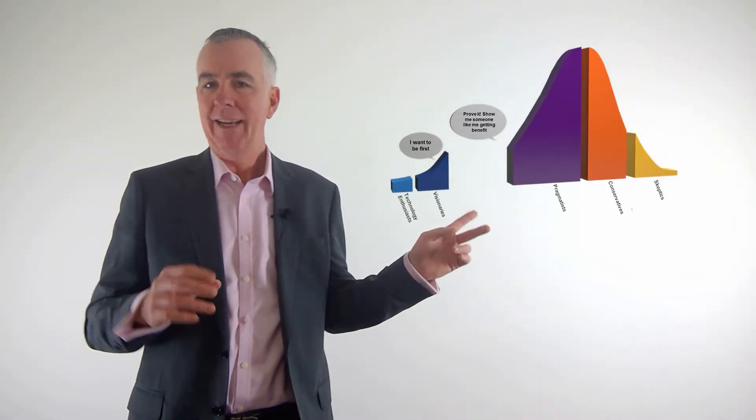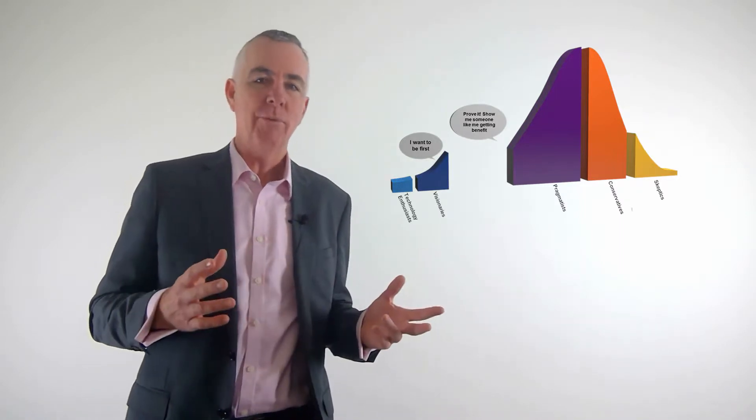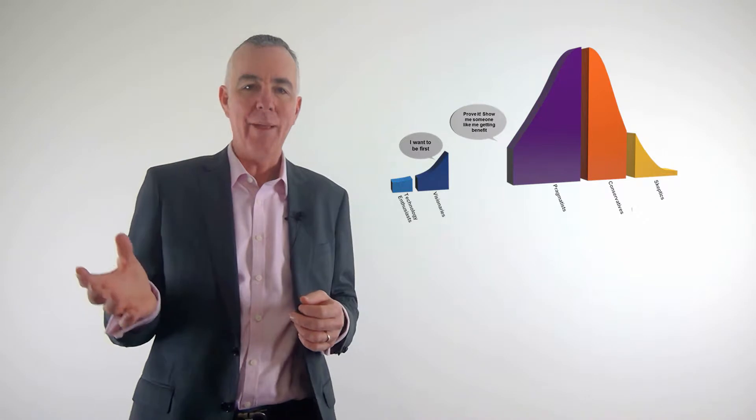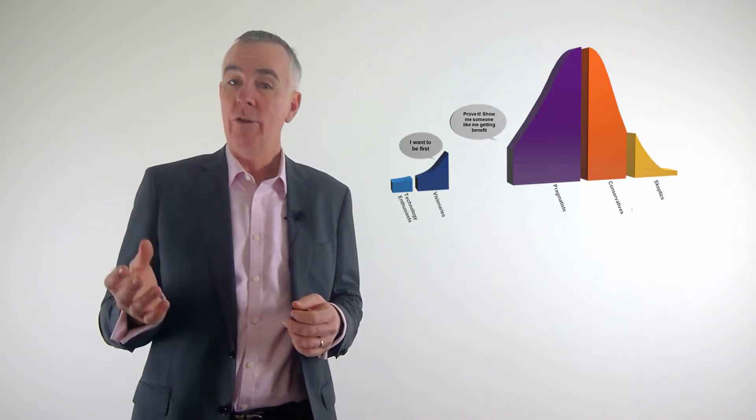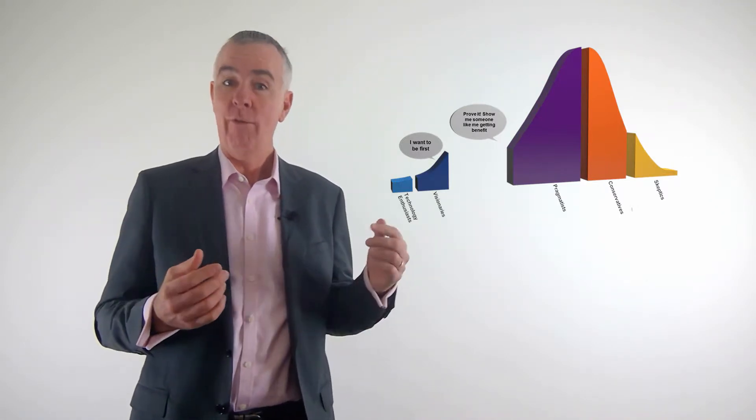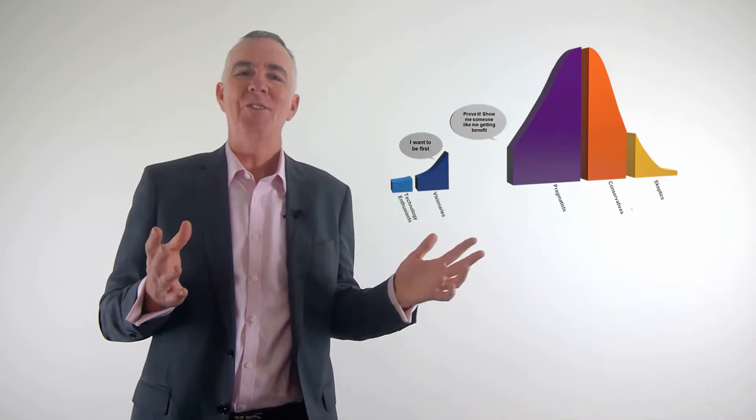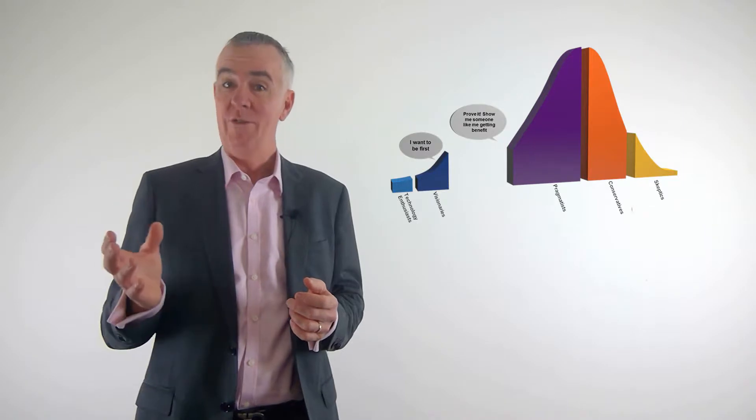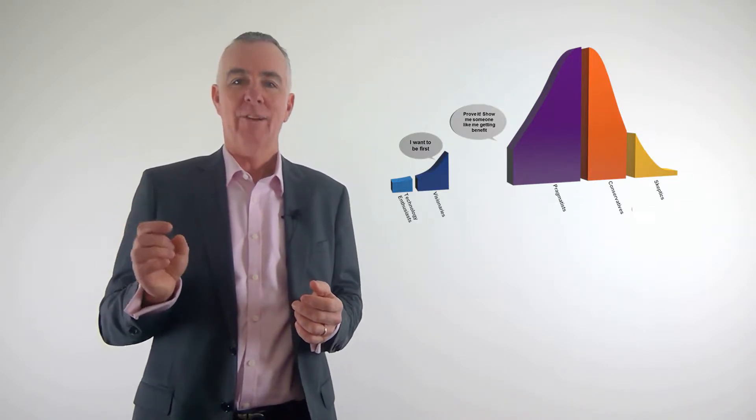We've all seen a maturity model like this in various forms. Laggards and early adopters, they're terms that even our kids use. We understand these terms, we know what they mean. So where are you and where are your competitors on this model? Well, that turns out to be completely the wrong question. I don't care where you are. The question is, where is your buyer?